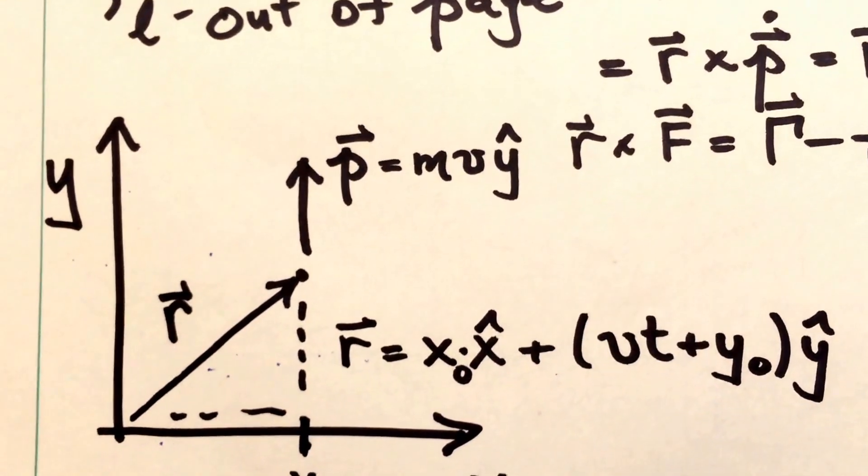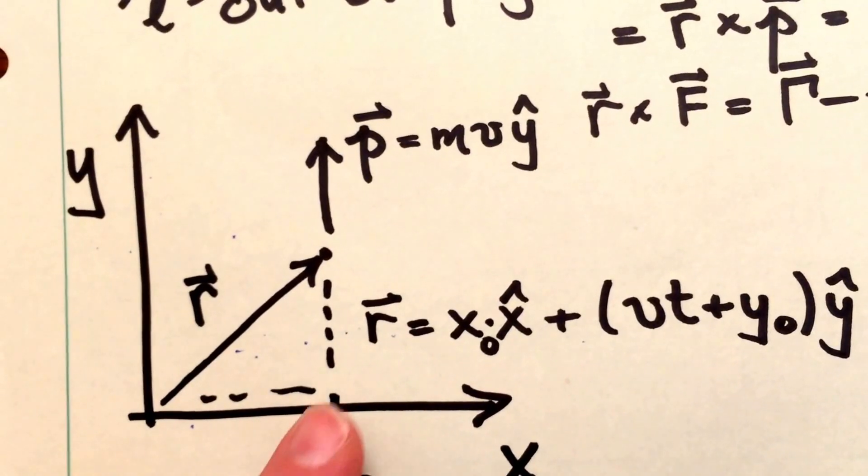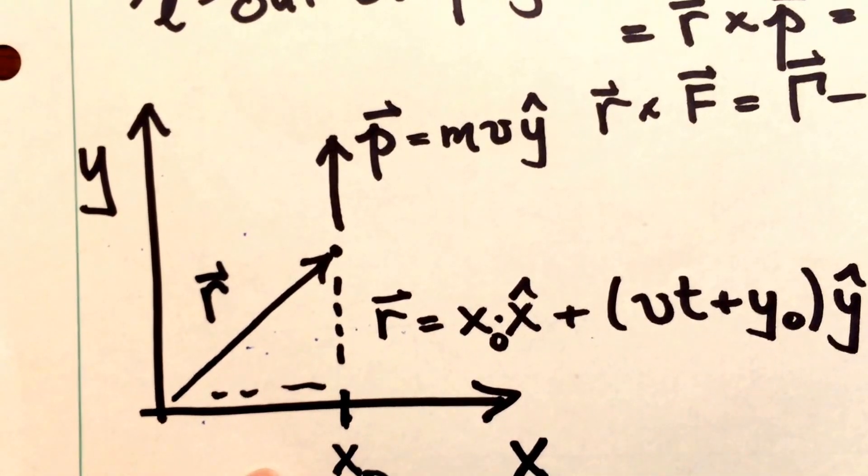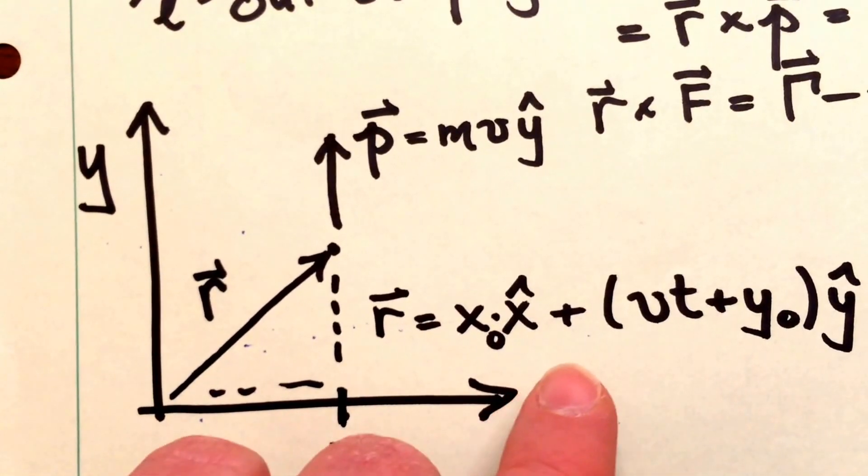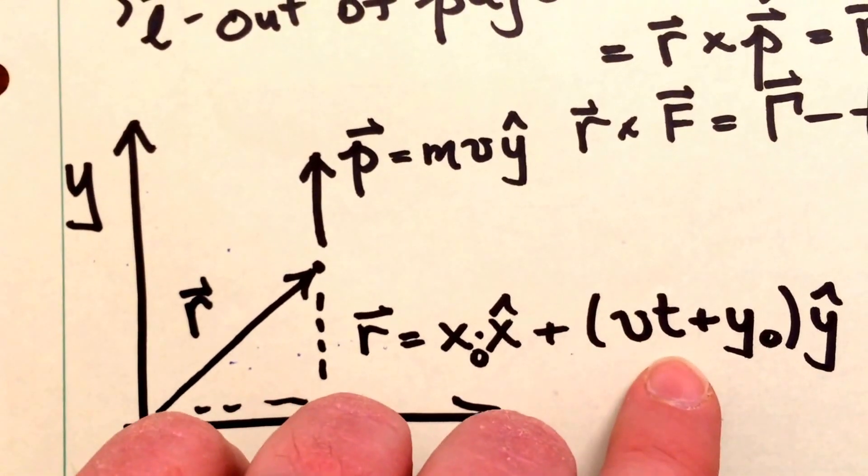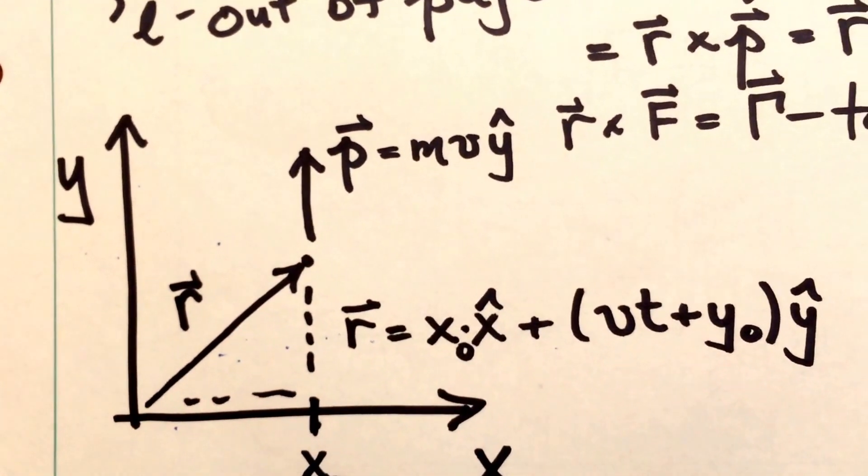Its position vector is a little more complicated. It's shown here, the position vector. The x component, it's just going to be some x naught, so it's some constant value. And then the y-coordinate is going to be its velocity times time plus some initial value for the y-coordinate.